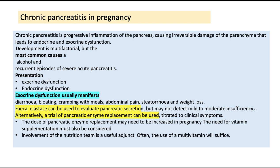Chronic pancreatitis is progressive inflammation of the pancreas causing irreversible damage to the parenchyma, leading to both endocrine and exocrine dysfunction. Its development is multifactorial, but the most common causes are alcohol and recurrent episodes of severe acute pancreatitis.